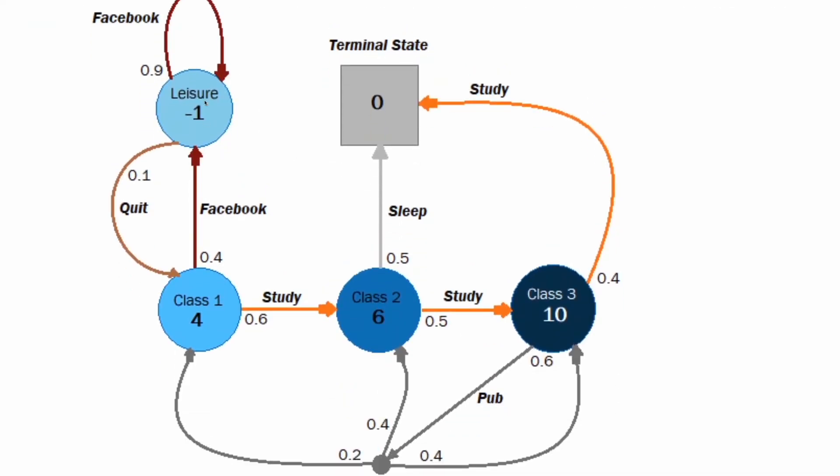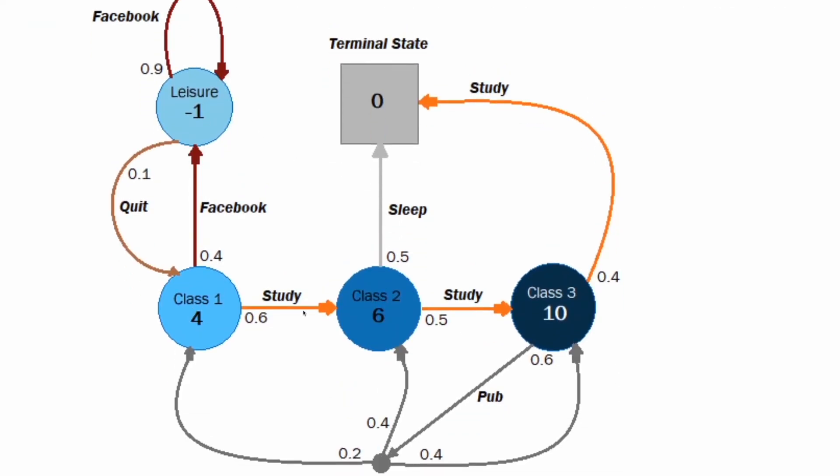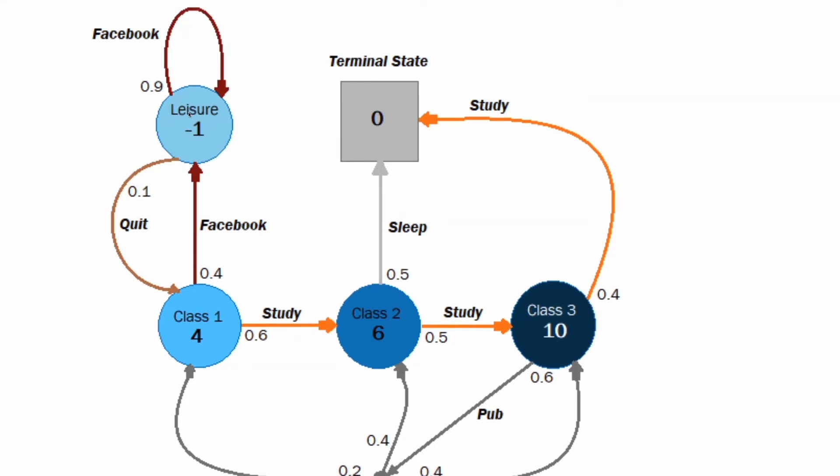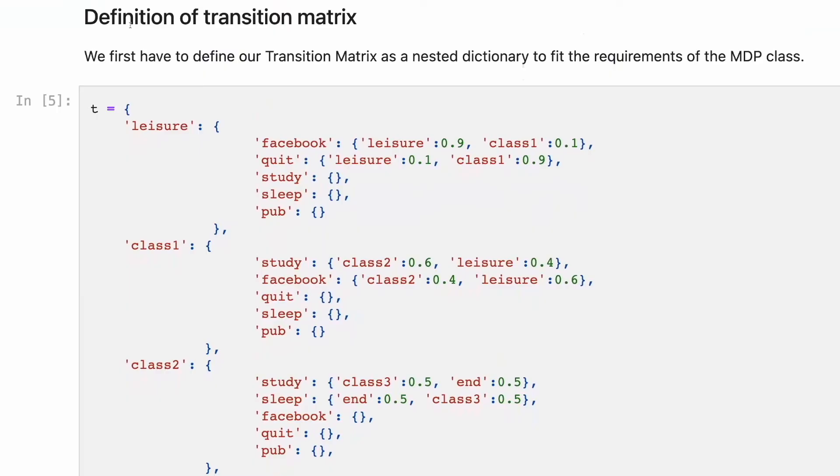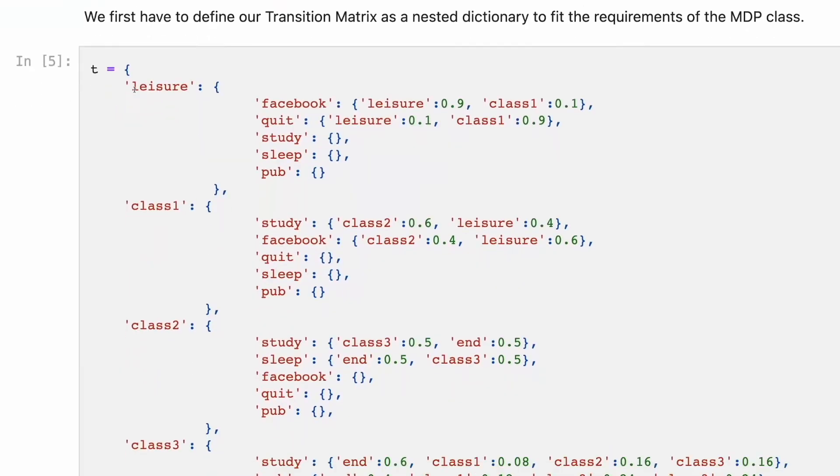Appear in one of the states. The states is leisure and classes. The harder the class, the more reward we get for it and we get penalized for being lazy scrolling Facebook. And the set of action is different for each state, as you see. Also, there is a terminal state, you end with sleeping or studying. What is transition matrix? As I told you before,